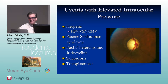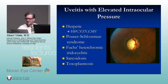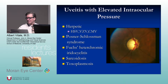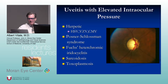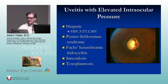Differential diagnosis of hypertensive uveitis: herpes until proven otherwise, including CMV, because immunocompetent patients can develop CMV uveitis. Also Posner-Schlossman syndrome, Fuchs heterochromic uveitis syndrome, sarcoidosis, and toxoplasmosis.